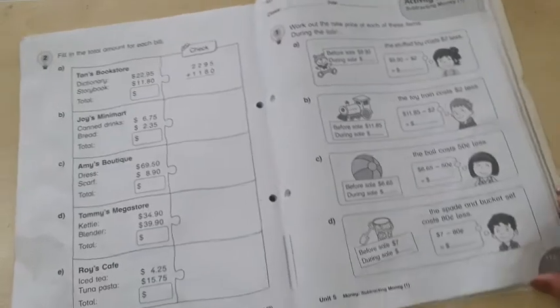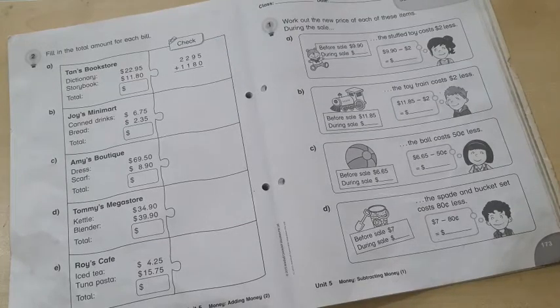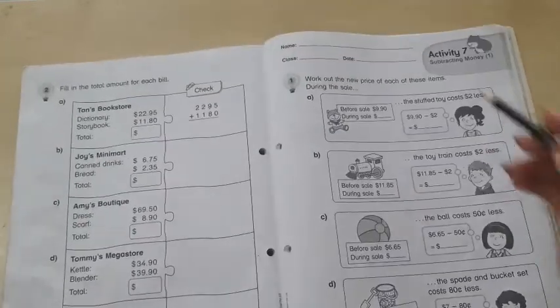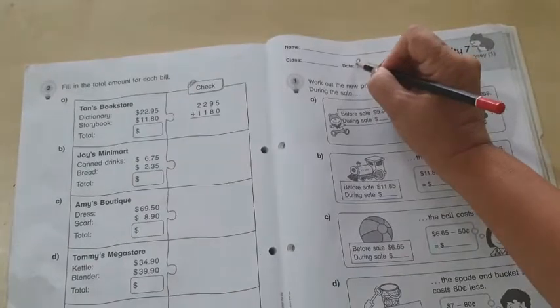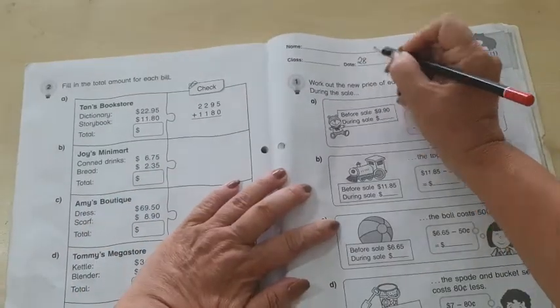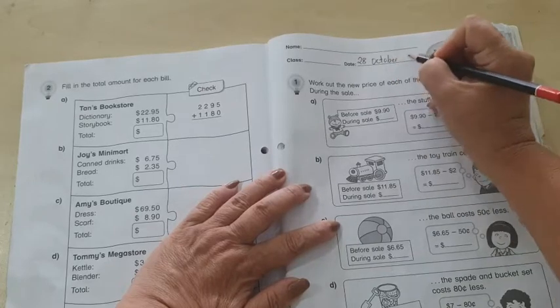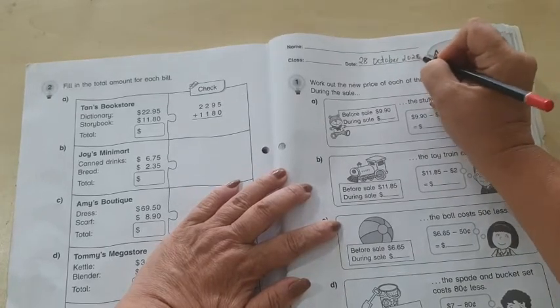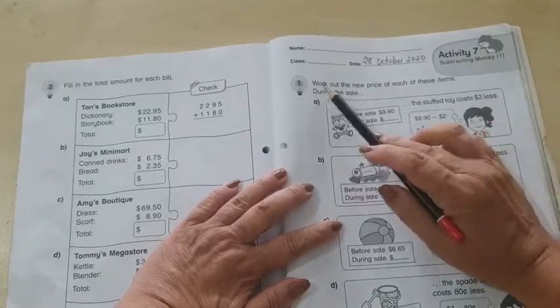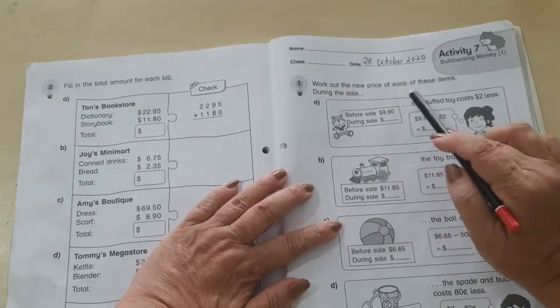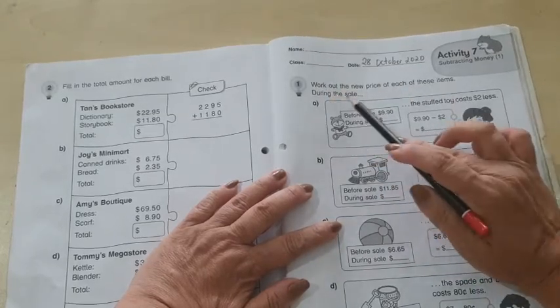So, page 173, write the date, 28th October 2020. Okay, now, work out the new price of each of these items during the sale.